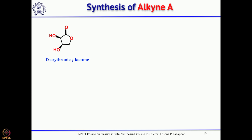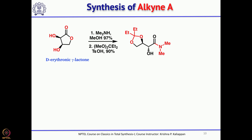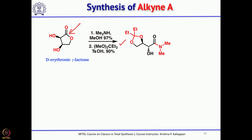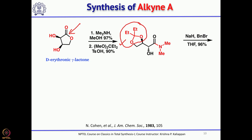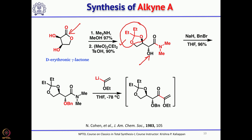Treatment with dimethylamine and methanol opens the 5-membered lactone to get the corresponding triol and amine. The triol upon treatment with protected 3-pentanone under acidic conditions allows the 1,2-diol to be protected as a ketal. Then sodium hydride and benzyl bromide benzylate the remaining secondary hydroxyl group, followed by treatment with 2-lithio vinyl ether.